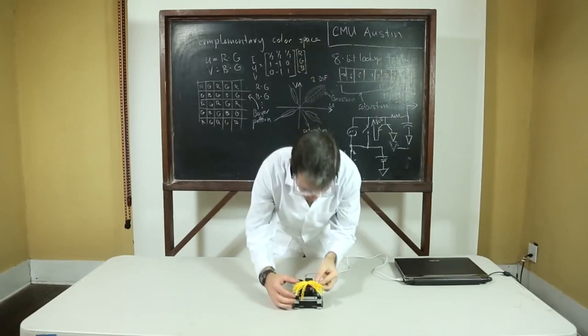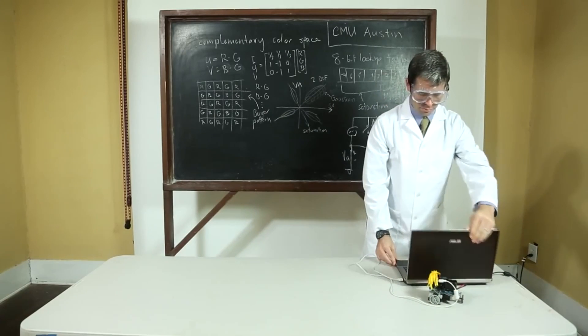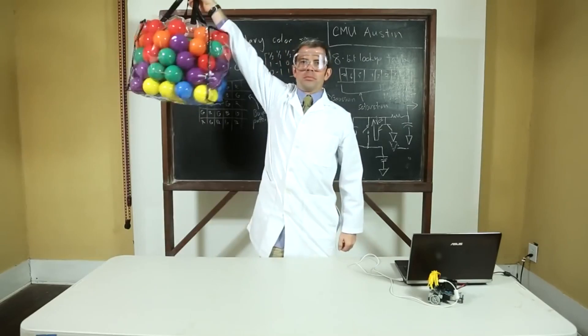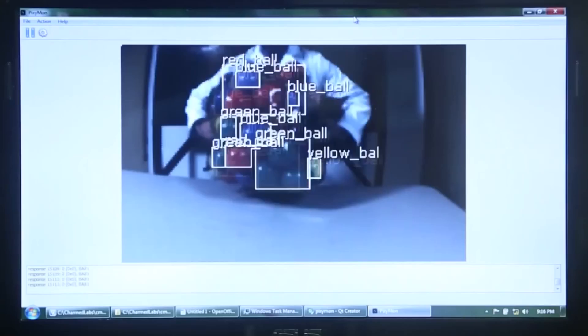You can plug Pixie into your computer with a USB cable and see what Pixie sees using software that's provided. Pixie is good at finding lots of objects. Seven different colors and a hundred objects are not a problem.